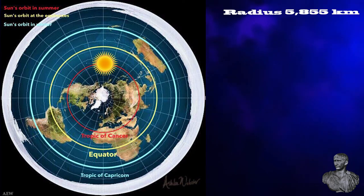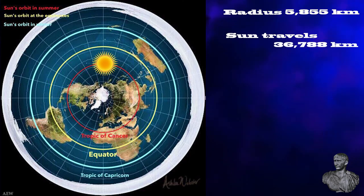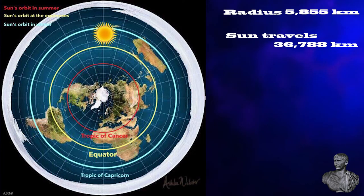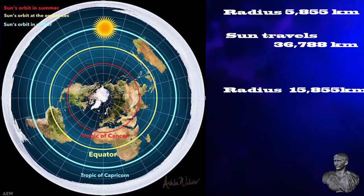And using the formula for circumference, circumference equals 2 pi r, we get a distance of 36,788 kilometers the sun has to travel. To the Tropic of Capricorn, which on your model have a radius of 15,855 kilometers.